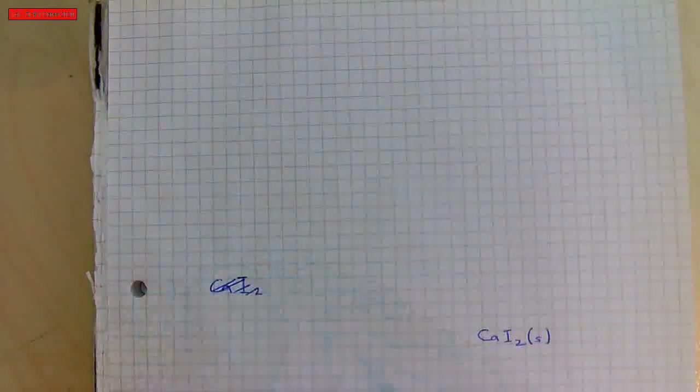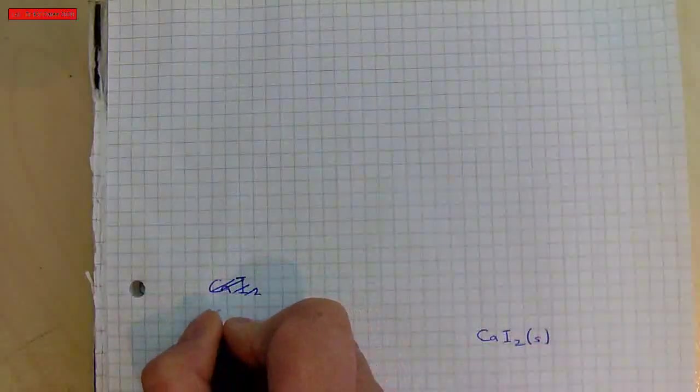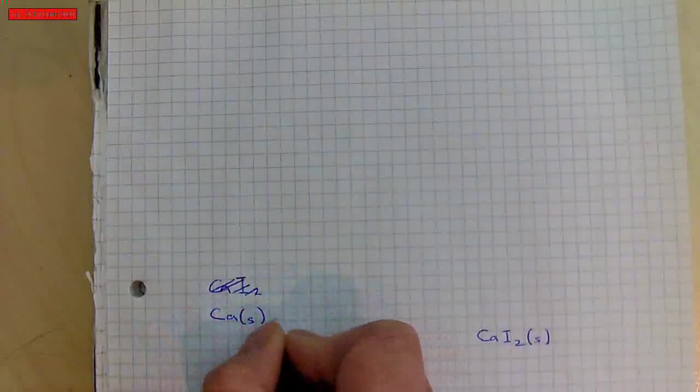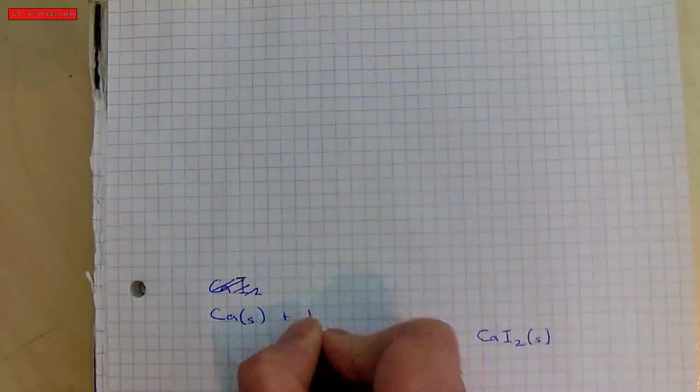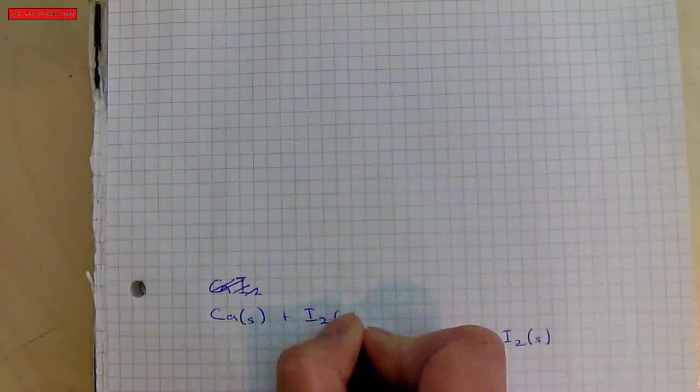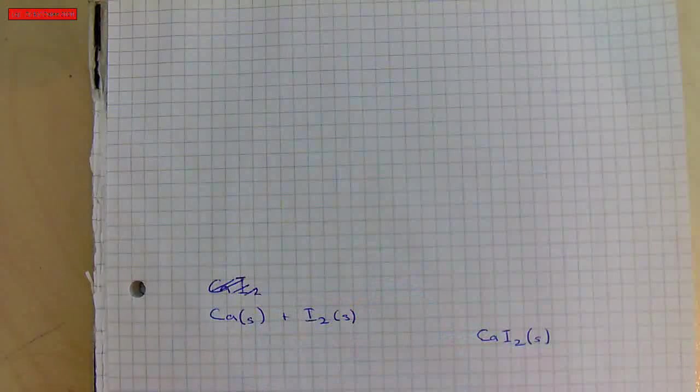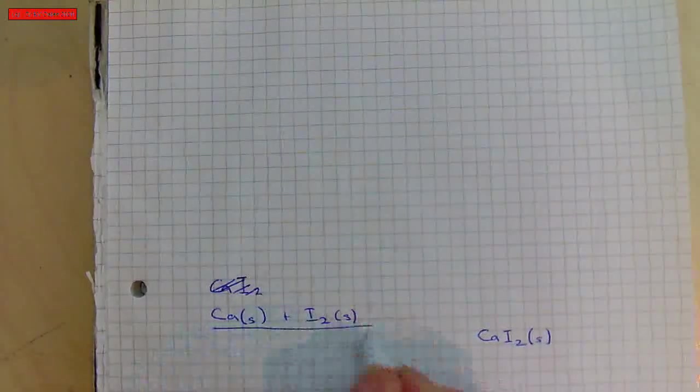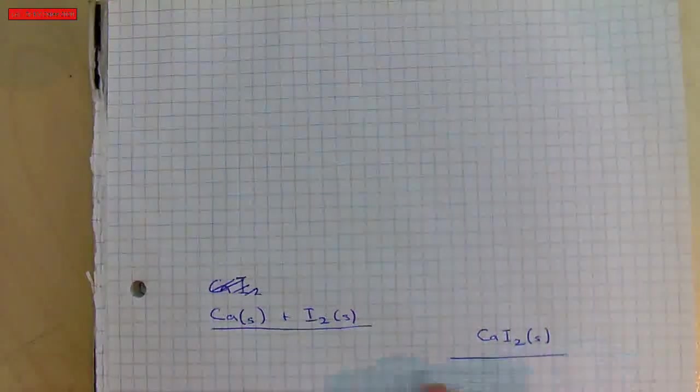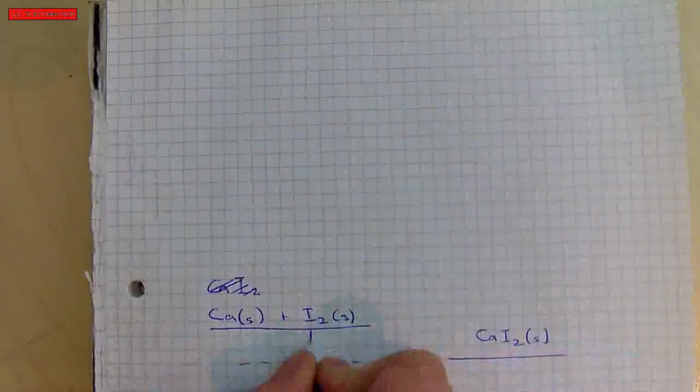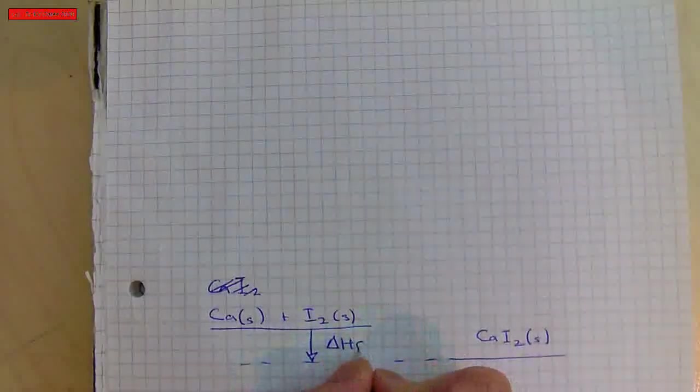Okay, so how do I make calcium iodide? I use calcium and iodine. Calcium and iodine are both solids. So to form calcium iodide, that's the enthalpy of formation.